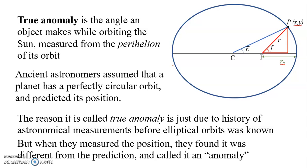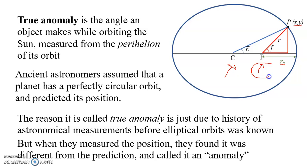Long ago, ancient astronomers assumed that a planet has a perfectly circular orbit, so they tried to predict positions using the circle's center C as their reference. But eventually, Kepler found that planets orbit following an elliptical path, so the center of reference is the focal point — not the geometric center of the orbit. That is why we call the angle using the focus the true anomaly, and the angle using the center the eccentric anomaly.